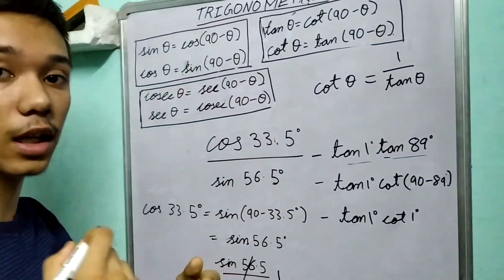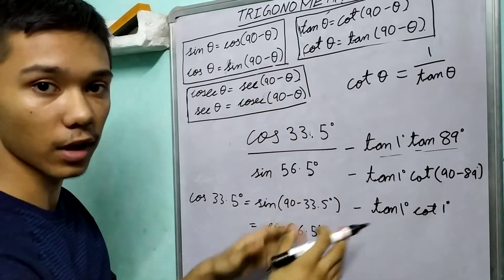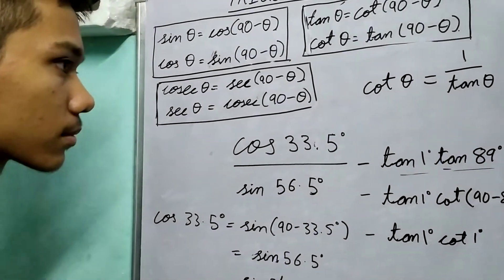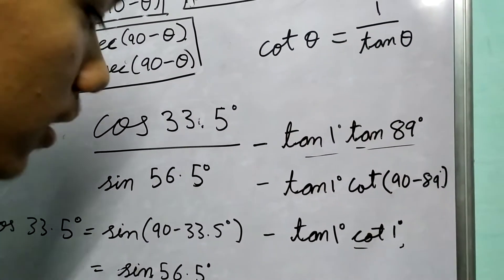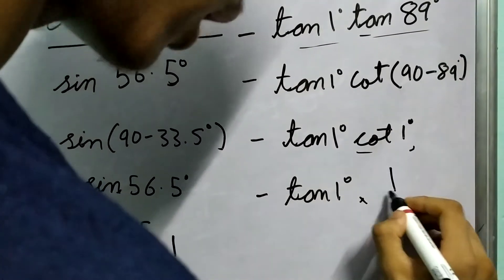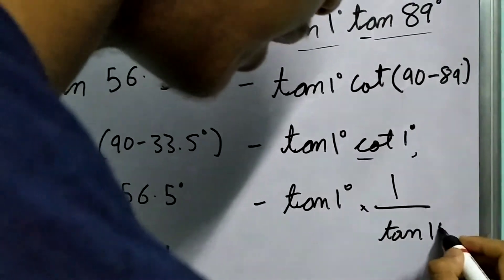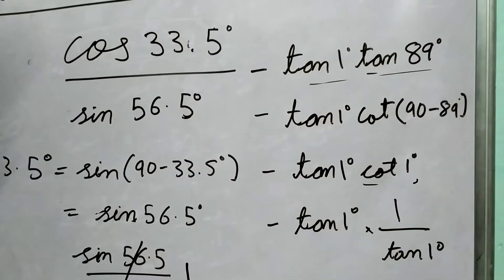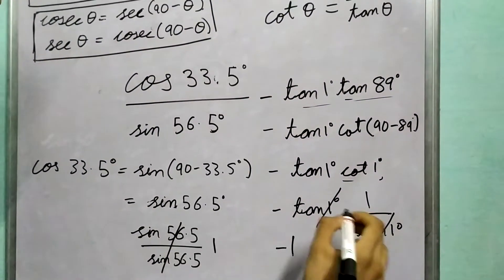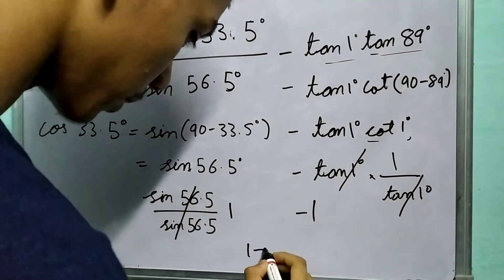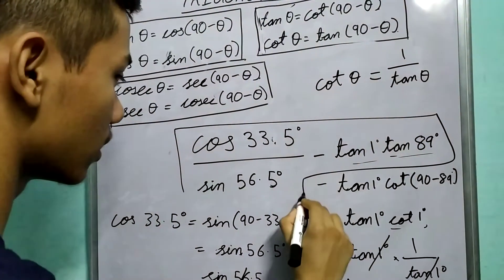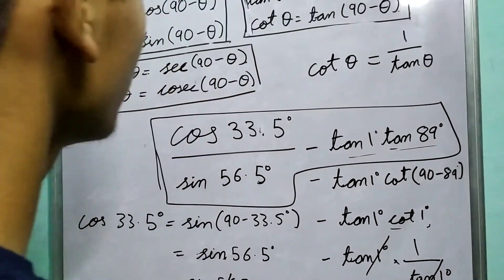We found this in our second video where I showed the trigonometric functions and their reciprocals — like the reciprocal of sin is cosec. Now using this property, we can write tan 1 degree multiplied by 1 upon tan 1 degree. These cancel out beautifully and we are left with 1. So our answer is 1 for this part and 1 for that part, giving us 1 minus 1, which is nothing but 0. So this long problem has been reduced to 0 with the help of our co-functions.